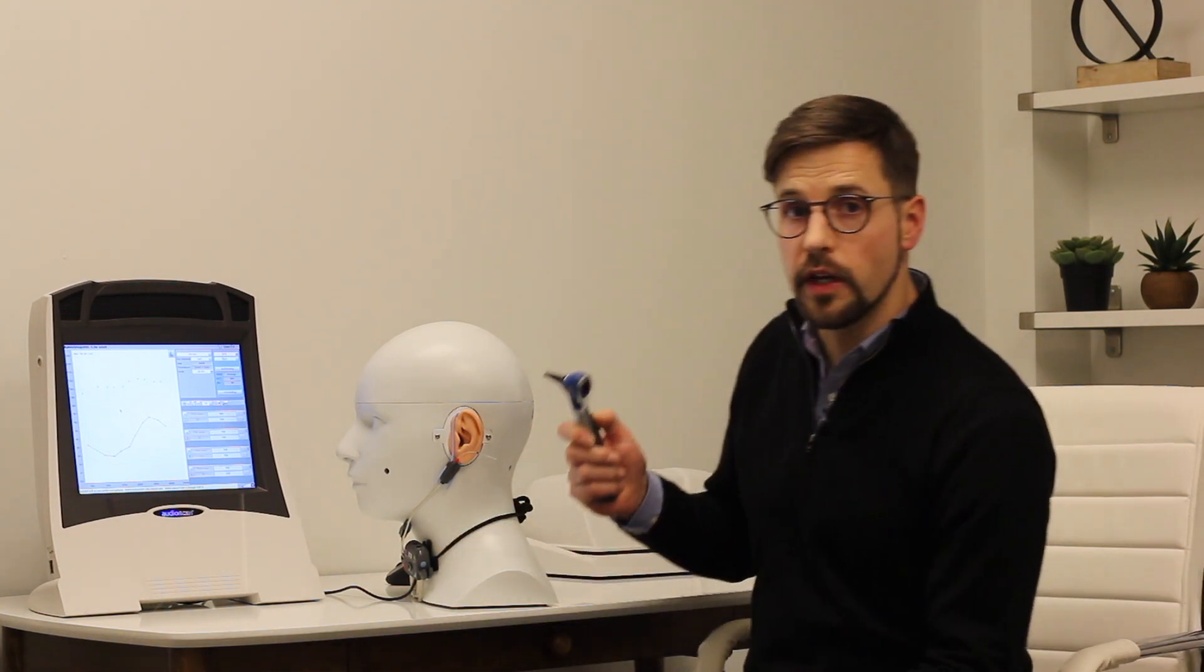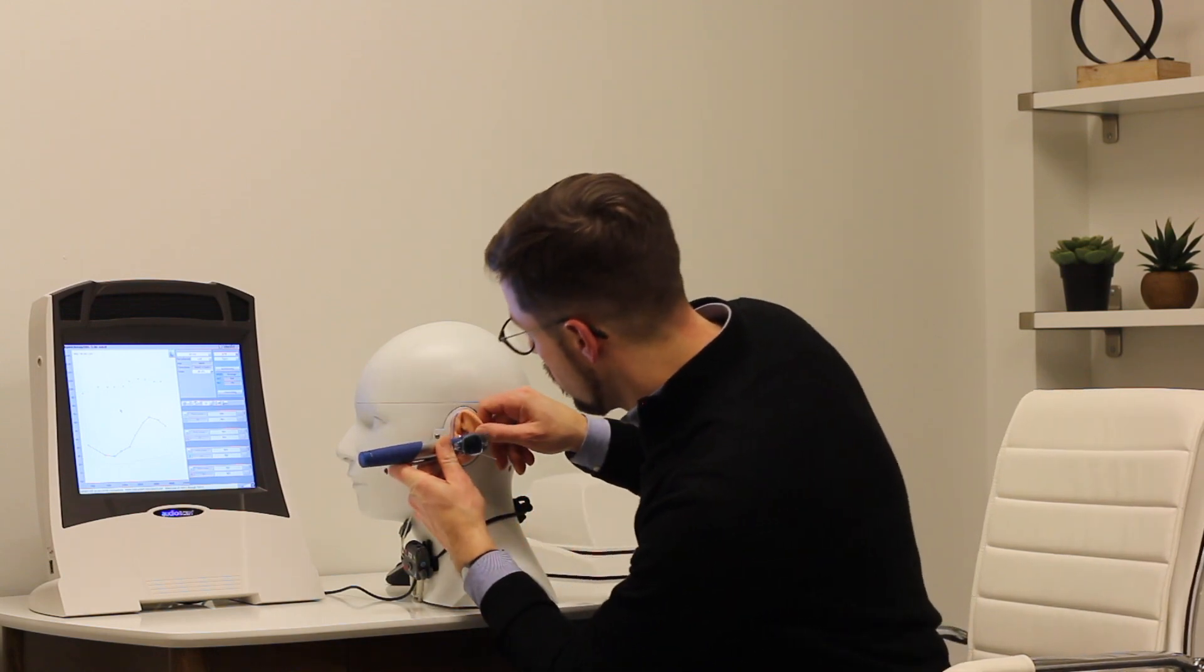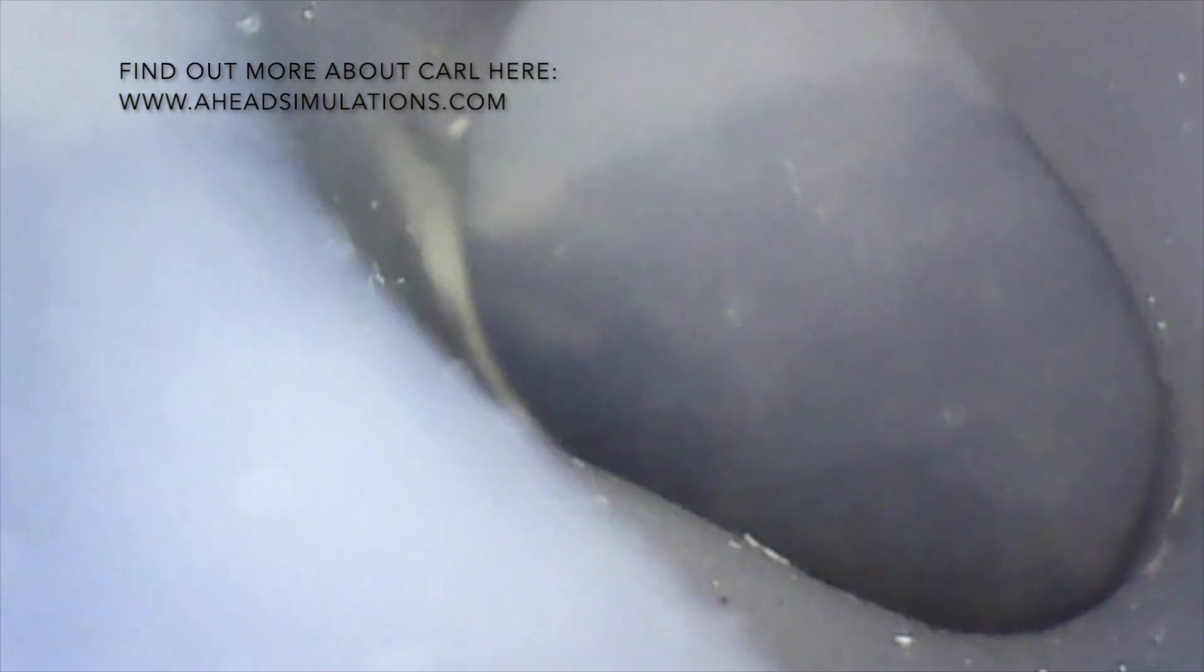Step number one is to have a look in the ear canal and make sure that you know where you're trying to place the probe. So I'm gonna have a look in Carl's ear here. And wouldn't you know it, Carl's got a nice clean ear. There's no wax, there's no hair. You will see bendy, narrow, waxy, hairy ear canals, but you can navigate them. Step number one is to have a look in the ear.